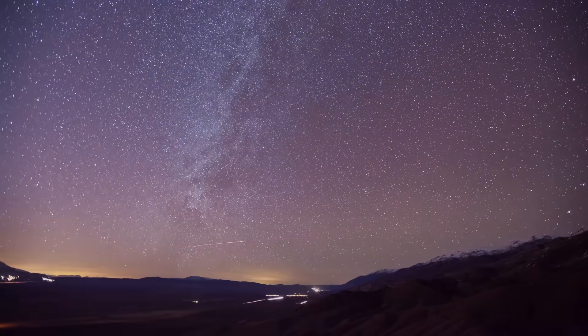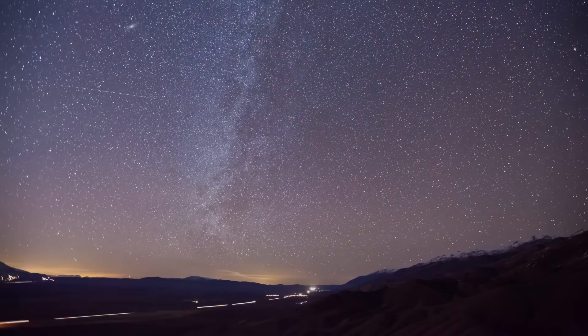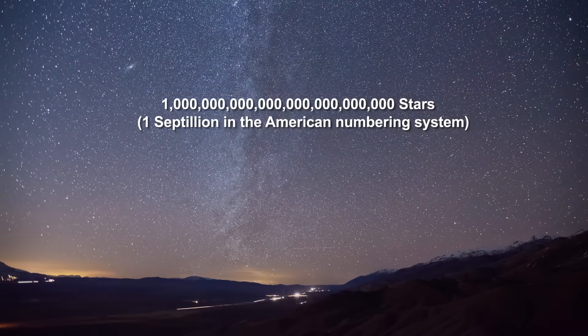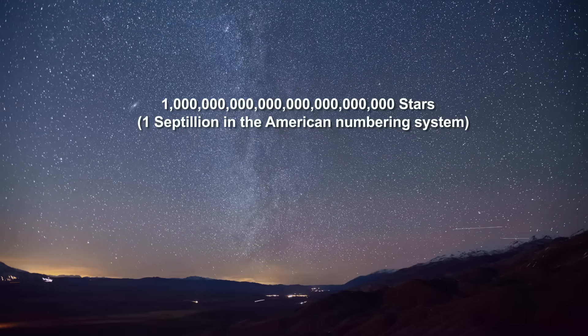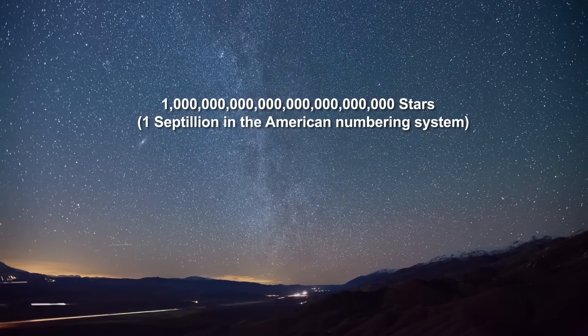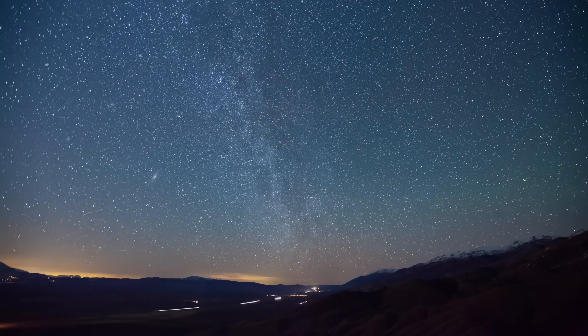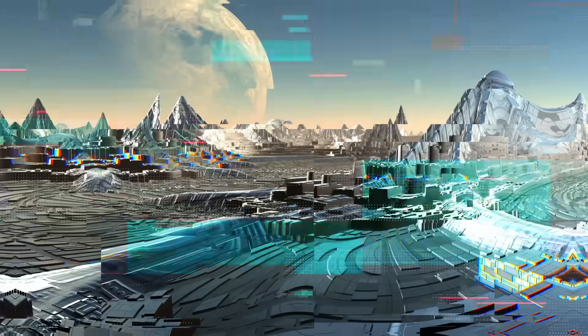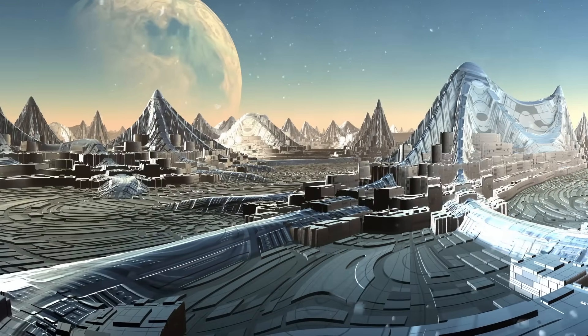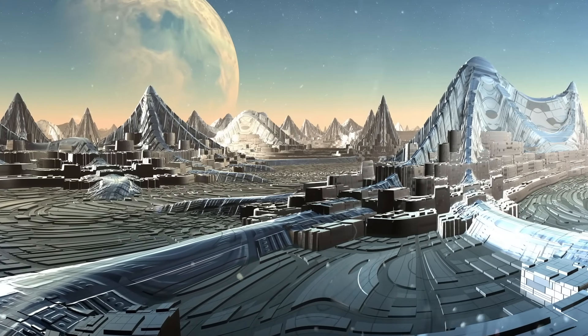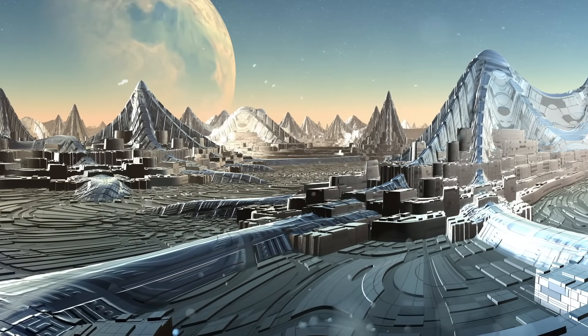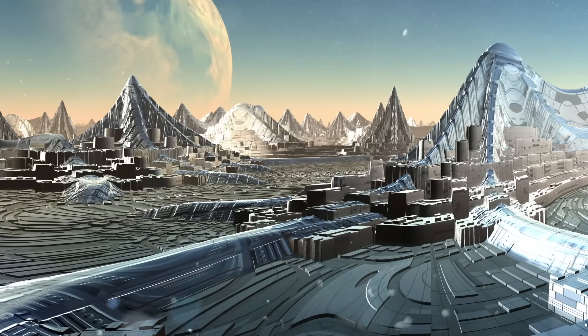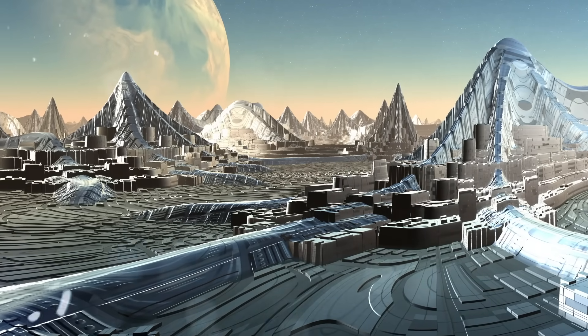By applying the new exoplanet data to the universe's 2x10 to the 22nd power stars, human civilization is likely to be unique in the cosmos only if the odds of a civilization developing on a habitable planet are less than about 1 in 10 billion trillion. One in 10 billion trillion is incredibly small, says Frank. To me, this implies that other intelligent, technology-producing species very likely have evolved before us.